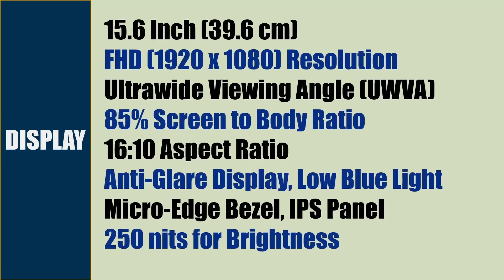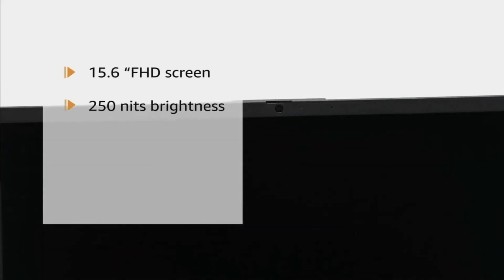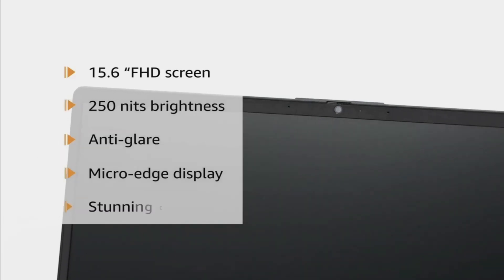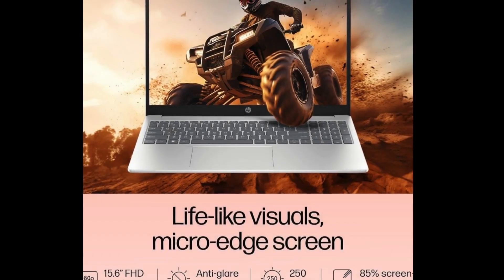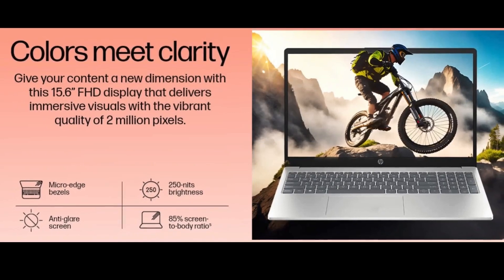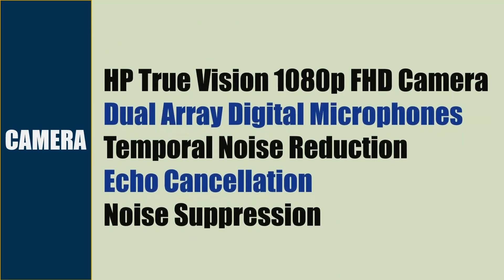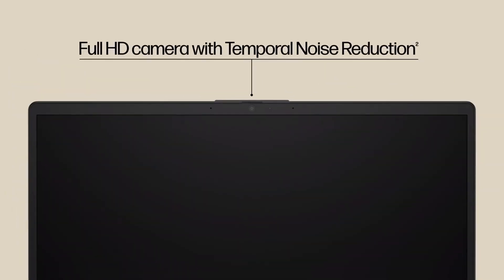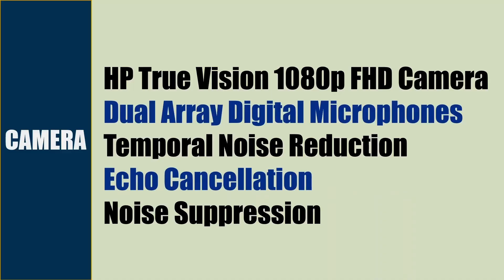The display is a 15.6-inch full HD panel with 1920 by 1080 pixel resolution, ultra-wide viewing angle, 16:10 aspect ratio, 85% screen-to-body ratio, IPS panel, micro-edge bezel, anti-glare, and low blue light to reduce eye strain. Brightness is 250 nits. The camera is a True Vision 1080p full HD camera with dual array digital microphones, temporal noise reduction, echo cancellation, and noise suppression.